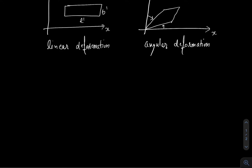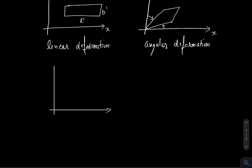Now the case we are interested in is rotation. This particle can also rotate. The length is the same and the breadth is the same as the initial reference, but this particle has rotated at a certain angle theta. This is rotation.